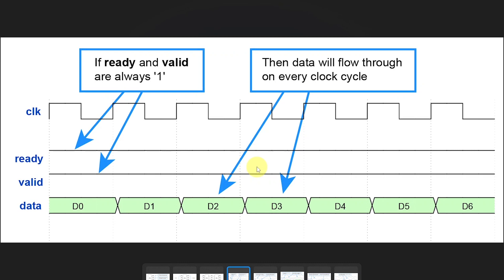Let's discuss some example waveforms to better understand how this handshake works. The most straightforward example is when ready and valid are both 1 continuously. If they both have the value 1, data transfer will happen on every clock cycle, because the contract between the sender and the receiver is that when ready and valid are both 1 during the same clock cycle, data transfer happens. The receiver has the obligation to consume the data item, and the sender has the duty to put the next data item on the bus. On every clock cycle there is a new data transfer.